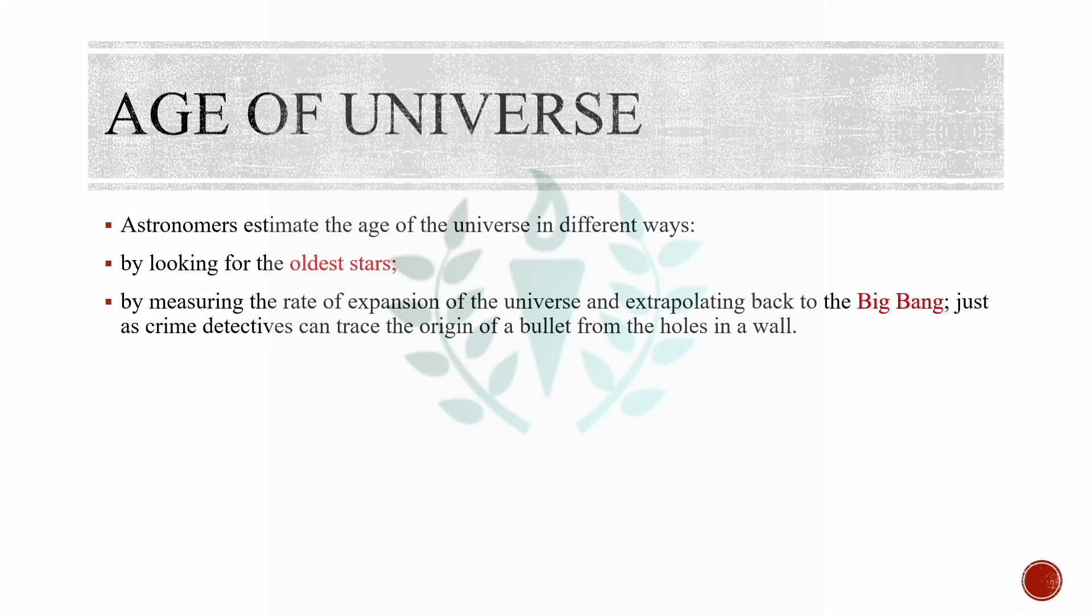Hubble noted that light from far away galaxies appear to be stretched to longer wavelengths or reddened, a phenomenon called redshift. By precisely determining the expansion rate called the Hubble constant, the cosmic clock can be rewound and the age of the universe calculated.